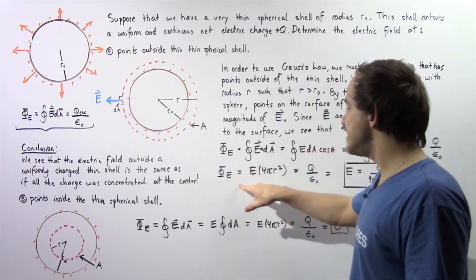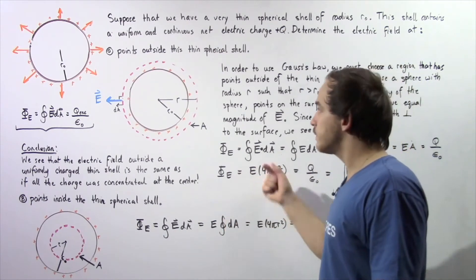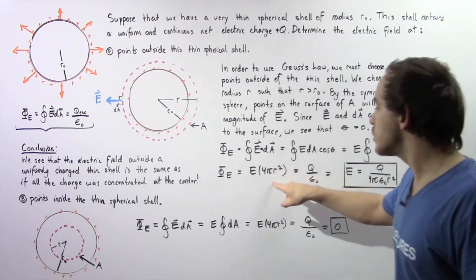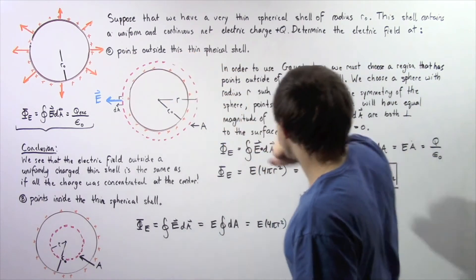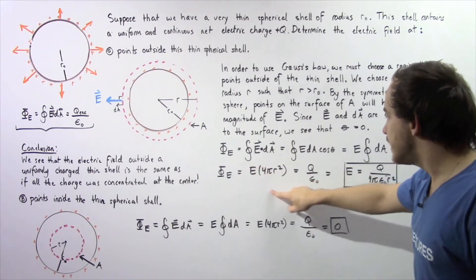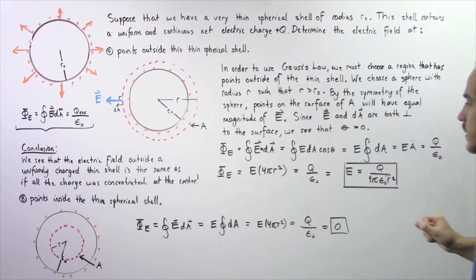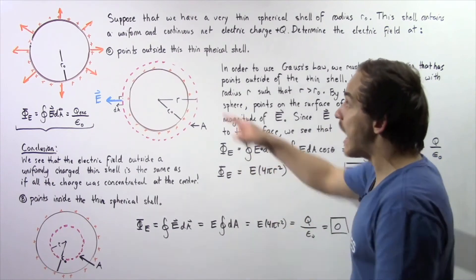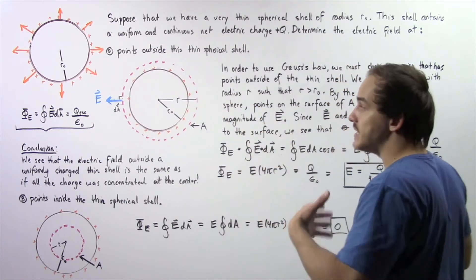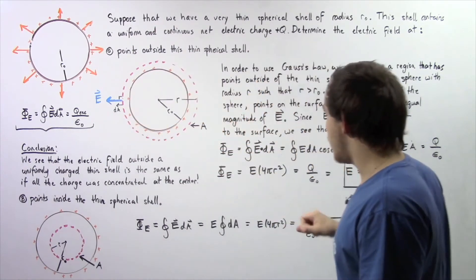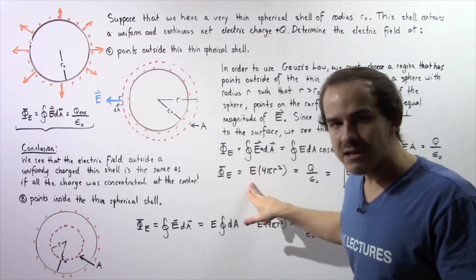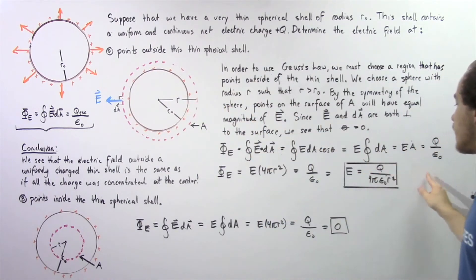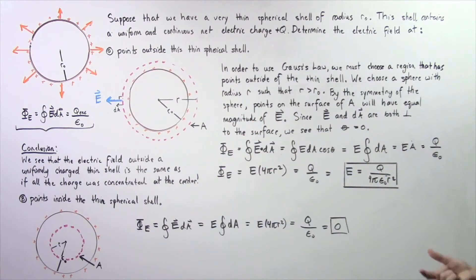The net electric flux equals the electric field E multiplied by the surface area of region A. The surface area of a sphere is 4πR², where R is the radius of the outer region A. Setting this equal to Q/ε₀ and solving for the electric field, we get E = Q / (4πε₀R²), where Q is the total charge enclosed — the entire charge on the thin spherical shell.